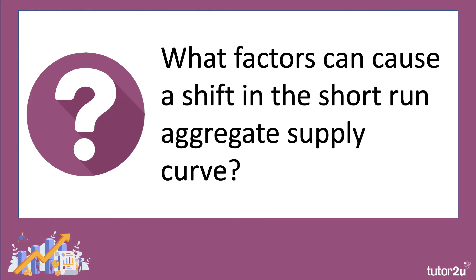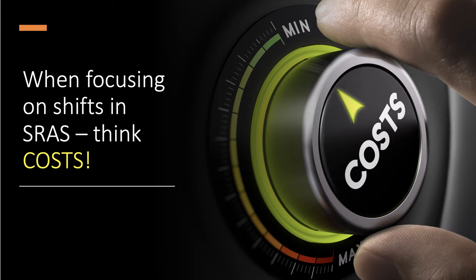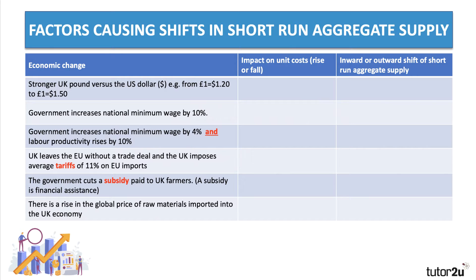What factors can cause a shift in short-run aggregate supply? When thinking about shifts in aggregate supply in the short term, focus on costs of production — and in particular focus on the unit cost, the cost per unit of getting goods and services to consumers across different industries, from manufacturing through to services. Here are six factors that could cause a shift in short-run aggregate supply. Press pause or take a screenshot, have a go — do unit costs rise or fall, and what's the consequence for the SRAS curve: inward or outward shift?